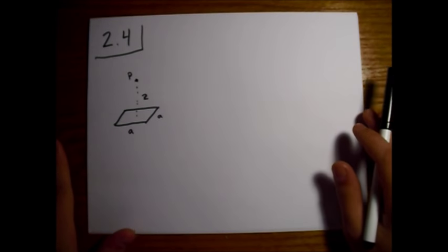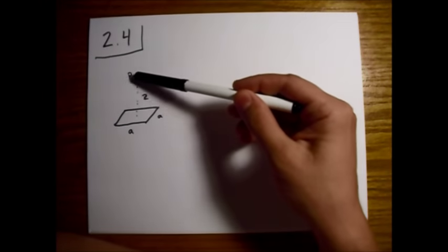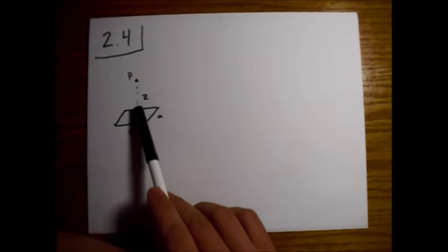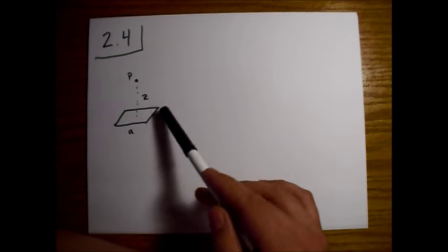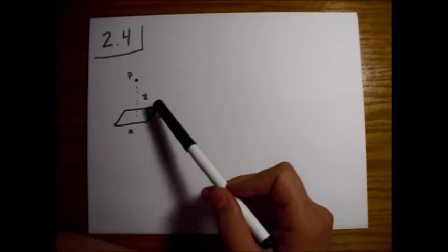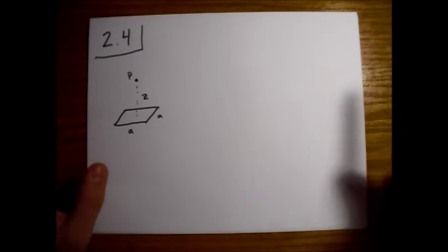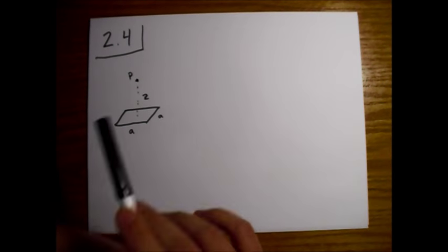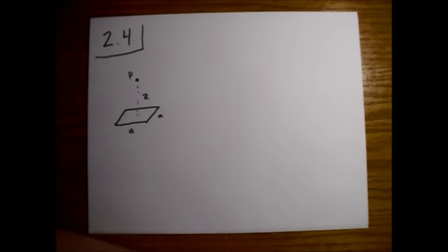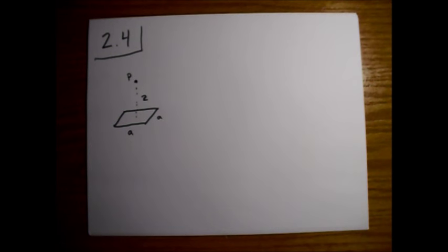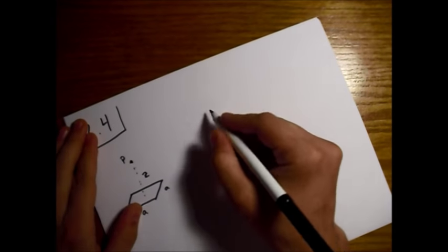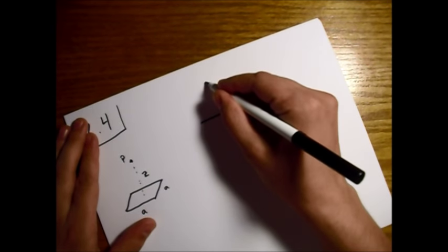This is Griffith's electrodynamics problem 2.4. We're going to find the electric field at point P, which is a distance Z above the center of a square loop of charge — a charged wire forming a square. Griffith allows us to use example 2.2 from the previous page, which finds the electric field from a finite line segment.